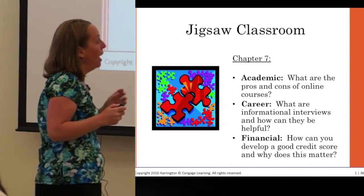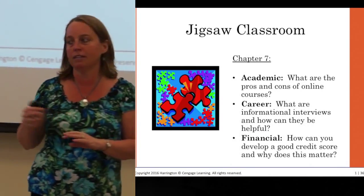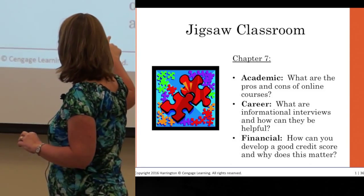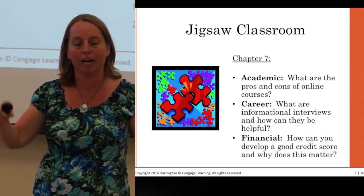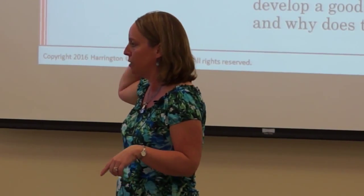We're going to try it now. I'm going to ask you all to identify one of these areas — you'll be answering the question attached to it. This is chapter seven content. Each of you at the table has to pick: one picks academic, one picks financial, one picks career. If you have a group that's not three, two of you share one and work together. Decide which expert group you're going to be part of. Take a minute to talk at your table, then we'll be leaving your tables and moving to the expert group in just a moment.